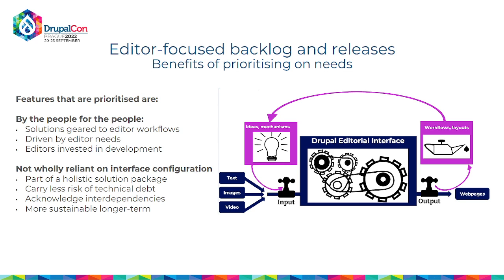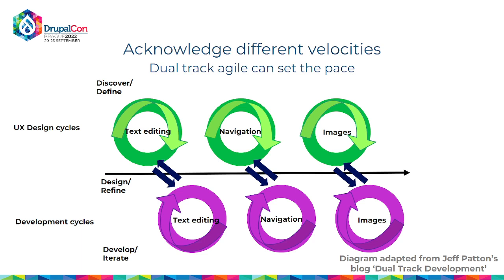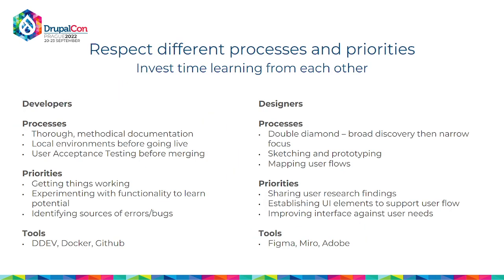Touching on aligning design and development within an agile framework — this is crucial to the whole co-design process. In an agile framework you'll have a series of sprints with UX and design work on particular interface features, and separate development cycles. It helps to acknowledge that these operate at different velocities. Once that's recognized, you can stagger them so UX and design feeds into development, with a two-way learning process between them.